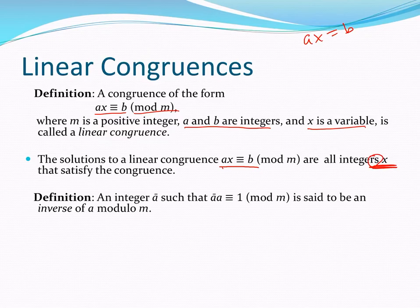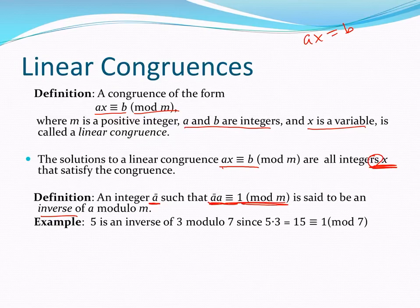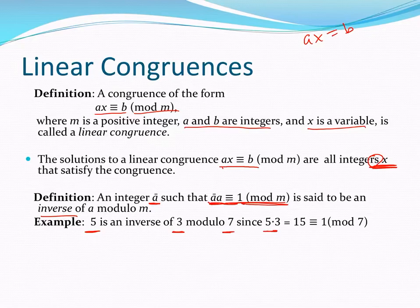Another definition. If I have an integer A, I say that A-bar is its inverse if A-bar times A is congruent to 1 mod M. So that is its inverse — the inverse of A is A-bar. For example, 5 is an inverse of 3 mod 7, since 5 times 3 is 15, which is congruent to 1 under the modulus of 7.